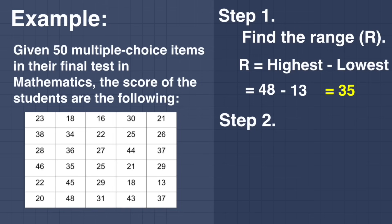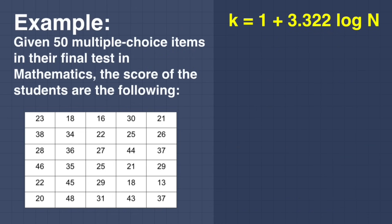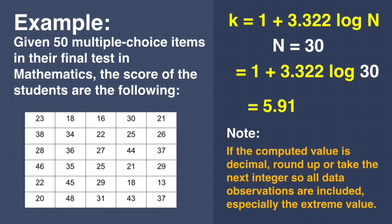Step number 2: Determine the number of classes or k. We use the Sturge formula: k is equal to 1 plus 3.322 times the logarithm of n. Since n is equal to 30, we substitute: k equals 1 plus 3.322 times logarithm of 30, which equals 5.91, or approximately 6. Note: if the computed value is a decimal, round up or take the next integer so all data observations are included, especially the extreme values.